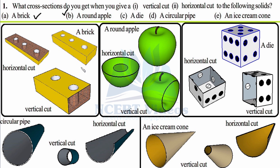What we learn from both vertical and horizontal cuts is that a solid is composed of similar-looking cross sections. When these cross sections are repeated or stacked multiple times, a particular solid is attained. For instance, if this rectangle is piled up, you get a brick again; if this circle is piled up, you get an apple. This is the mathematical way of describing solid items.